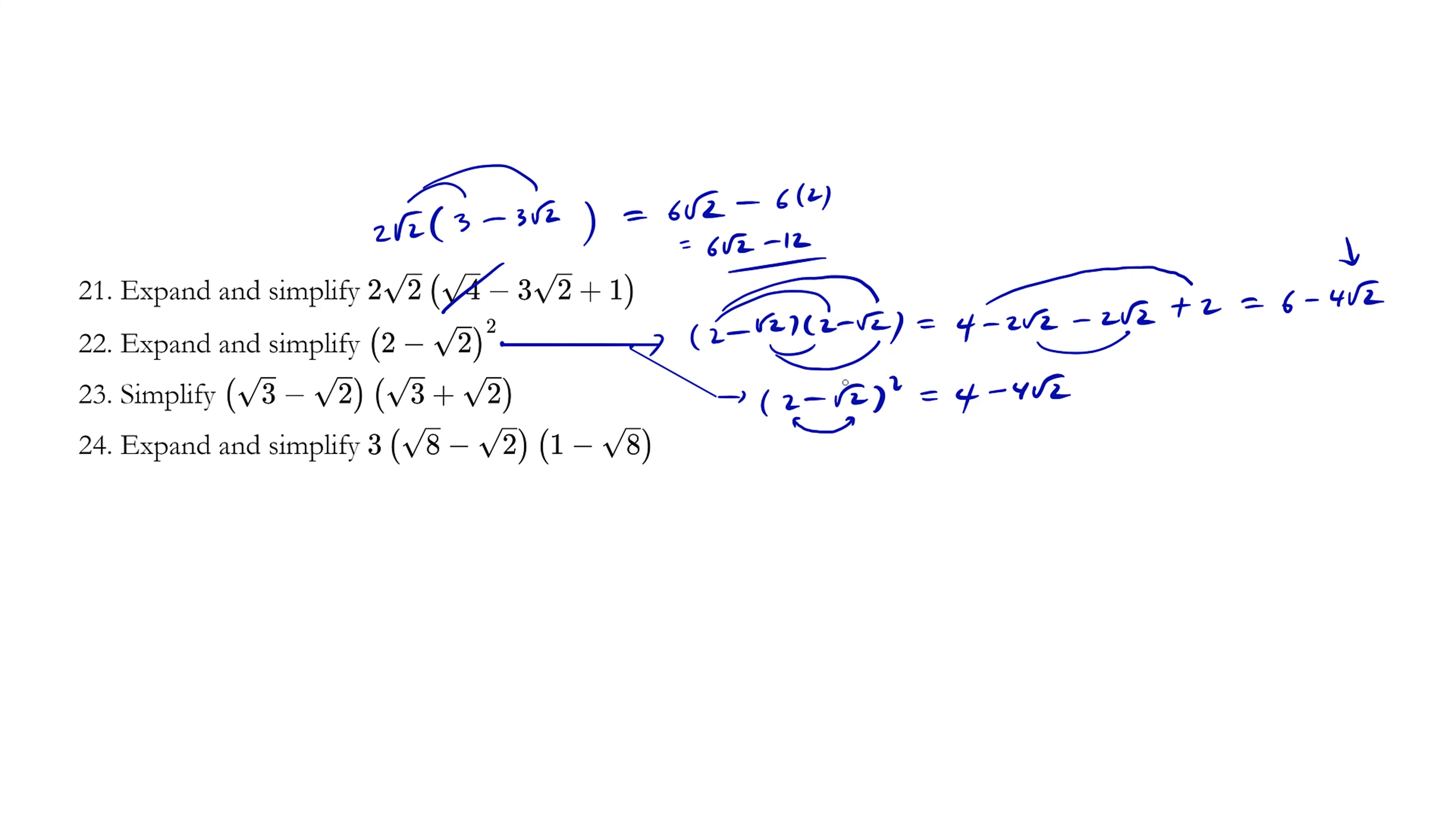Finally, you square out the last term. Negative times negative is positive. Root 2 times root 2 is just 2. So as you can see, 4 plus 2 is 6 minus 4 root 2 is the same answer. You can try to write out the answer in your head.